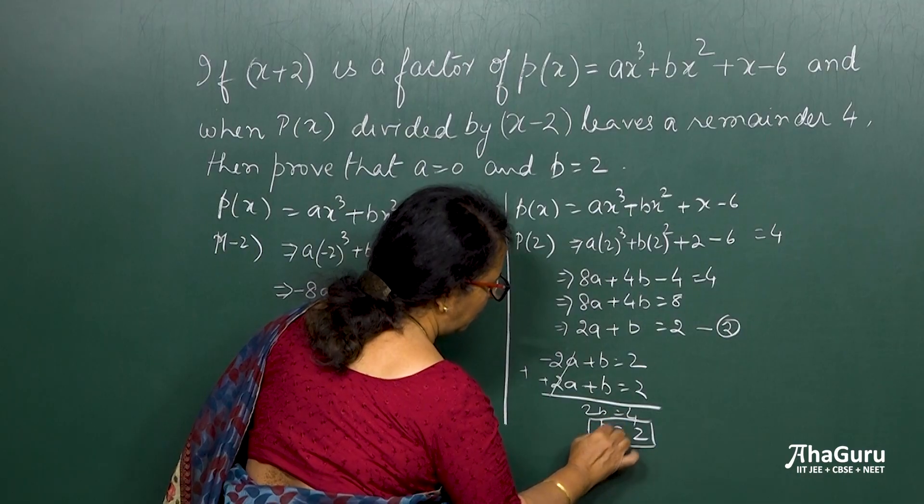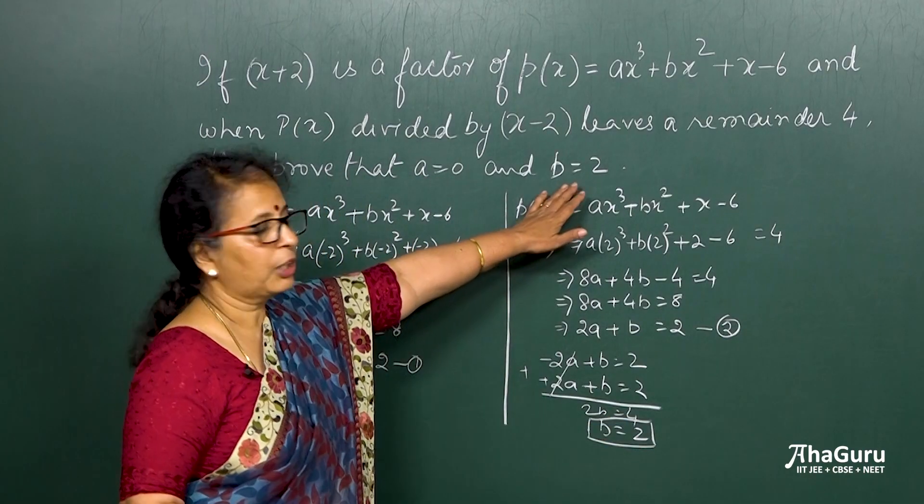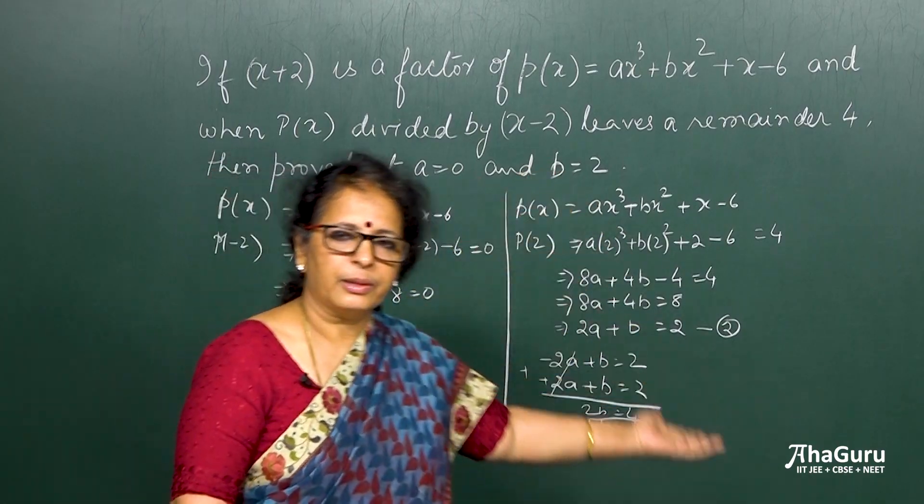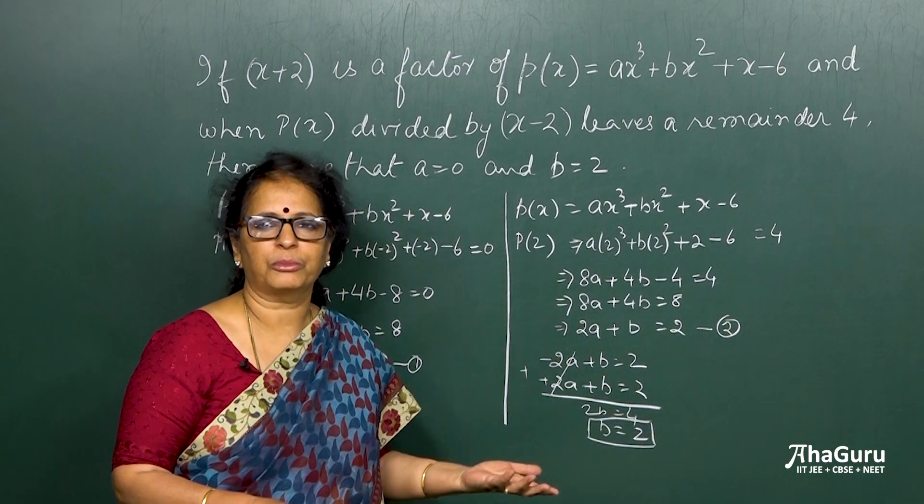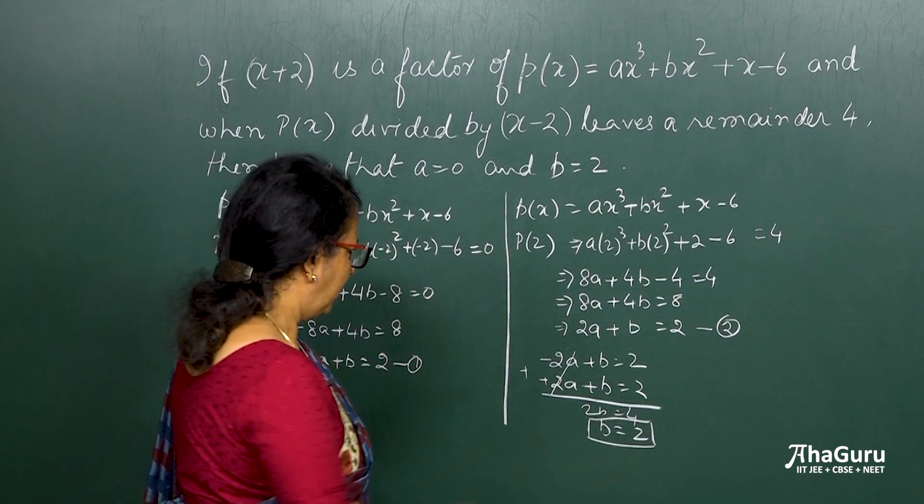Can you see that? B is equal to 2, which is what I am supposed to prove. Either it is a proof question, it's fine. If it is not a proof question, then your answer is b is equal to 2. That's what the question may be, find the value of a and b.